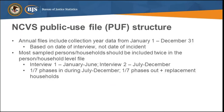The NCVS annual public use data files include collection year data from January 1st to December 31st. These dates are based on the date of the interview, not the date of the incident. Most of the sampled persons and households should be included twice in the person- or household-level files. NCVS interviews are conducted continuously throughout the year, and persons in each household are interviewed every six months for a total of seven interviews. In the data files, interview one is January through June, and interview two is July through December.